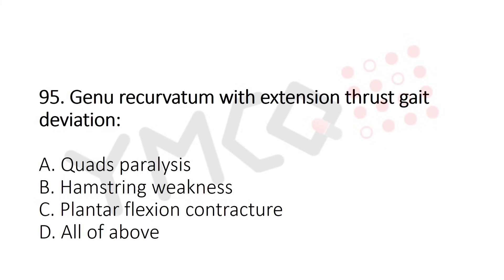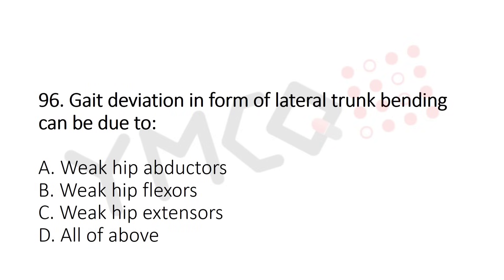Question 95: Gait deviation options include cord paralysis, hamstring weakness, plantar flexor contracture, or all of the above — the answer is option D: all of the above. Question 96: Lateral trunk bending gait deviation can be due to weak hip abductors, weak hip flexors, or weak hip extensors — the answer is option A: weak hip abductors.